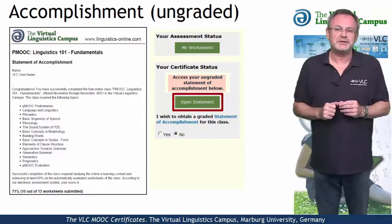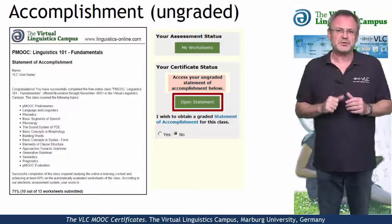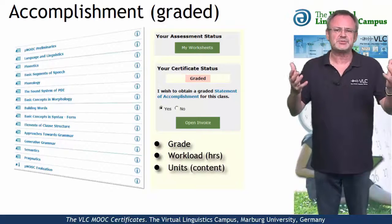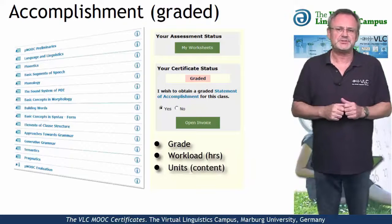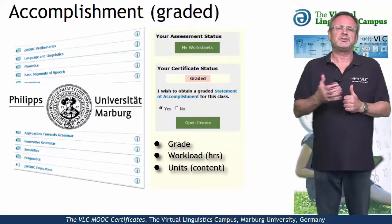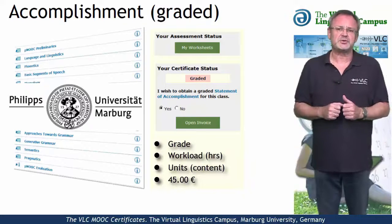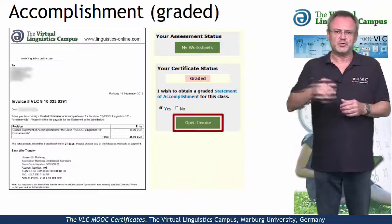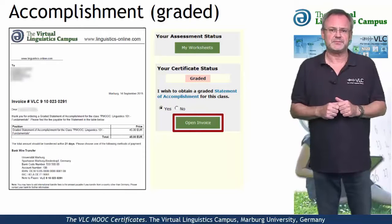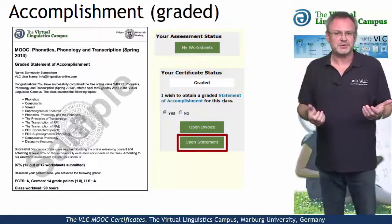If you want to obtain a graded Statement of Accomplishment, select Yes. This most advanced option of certification includes your precise grade, the workload in hours, and a complete list of all the tasks you successfully submitted. This graded Statement of Accomplishment is issued by Marburg University in conjunction with the Virtual Linguistics Campus and involves a fee of currently 45 euros. Once you have satisfied the conditions, you first open the invoice and transfer the money to Marburg University, and once your payment has been accepted, you can download your personal graded Statement of Accomplishment via mouse click.